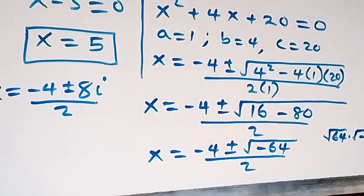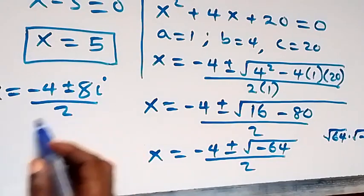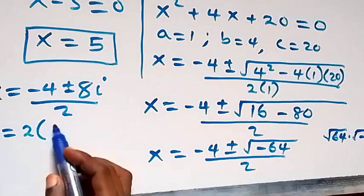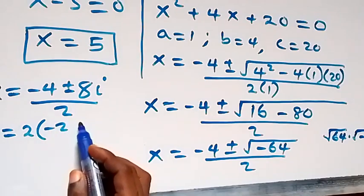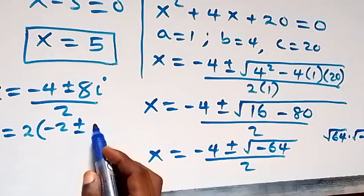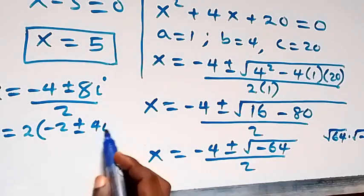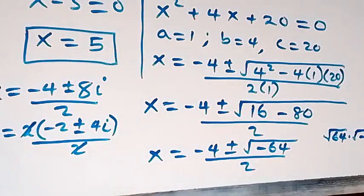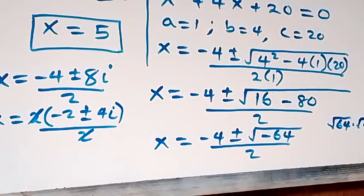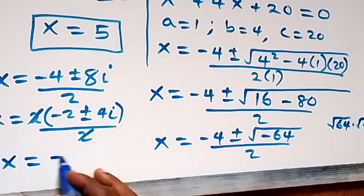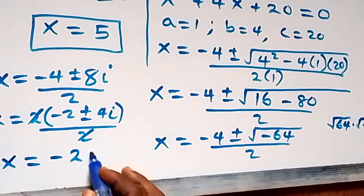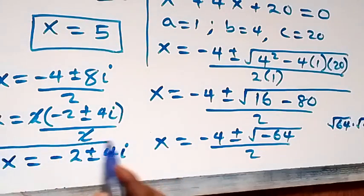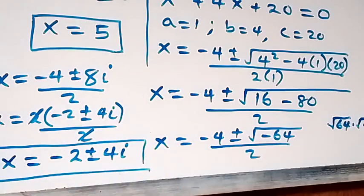Here, 2 is common in the numerator, so we factor it out: x equals 2 times the bracket (minus 2 plus or minus 4i), all over 2. The 2's cancel, giving us x equals minus 2 plus or minus 4i. So we have two complex solutions from here.